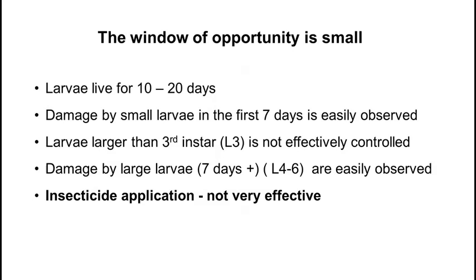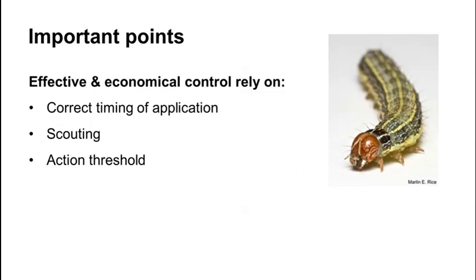For chemical control to be effective and economical, correct timing is of absolute importance. To have the correct timing, scouting is important, and at least some aspects of an action threshold concept should be taken into account. Because the economic threshold for fall armyworm control is not one.